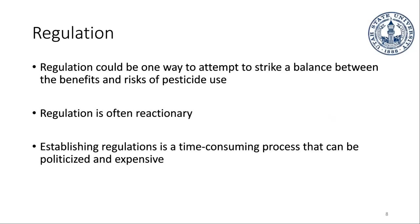In order to combat some of those negative consequences — chlorpyrifos was recently banned in California and DDT was eventually banned once they realized the health consequences — regulation is one way we try to strike a balance between the benefits of pesticides and the risks associated with their use. The way they do that is by establishing different limits on when you can spray a pesticide, where you can spray it, and how much you can spray.